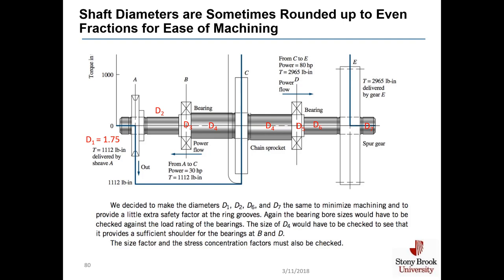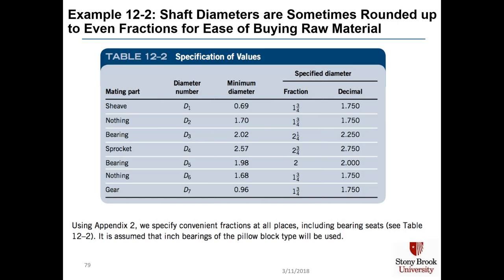Bore sizes must be checked against the load ratings of the bearings, so you can't round up arbitrarily — you can only do so case by case. You also have to get the diameters right to purchase standard ring grooves, requiring a lot of engineering judgment. Making D1, D2, D6, and D7 all the same at 1.75 inches minimizes machining time. Starting from a 2.75-inch diameter shaft and machining down to 0.69 would take a lot of time and make the part very expensive.